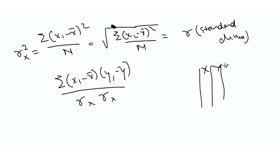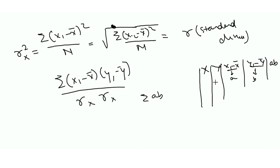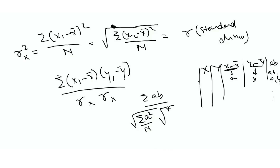You calculate (x_i minus x̄) — call this 'a' — and (y_i minus ȳ) — call this 'b'. Then you sum the products a·b for all data points: a1·b1, a2·b2, and so on. Sigma_x is the square root of the summation of a² divided by n, and sigma_y is the square root of summation of b² divided by n. So the formula is: summation of (a·b) divided by (sigma_x · sigma_y).